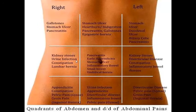The right lumbar region includes kidney stones because the right kidney is at the posterior part, and the ascending colon and small intestine are present here, so constipation can also cause pain in this area. We might also have lumbar hernia and urinary infection. The umbilical region presents with pancreatitis, stomach ulcers, inflammatory bowel and small bowel disease, and umbilical hernia.